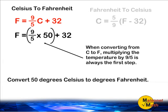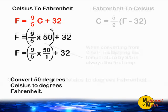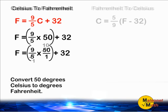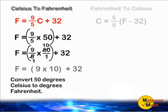After plugging in the degrees Celsius in for the variable C, we must multiply that by 9/5. When converting from Celsius to Fahrenheit, multiplying the temperature by 9/5 is always going to be your first step. The 50 and the 5 can be cancelled to be 10 over 1, and that gives us 9 times 10, which is equal to 90.